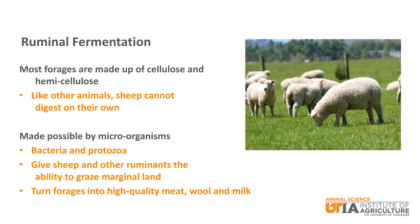Most forages are made up of cellulose and hemicellulose. Sheep, like other animals, are not able to digest these complex carbohydrates on their own. The ruminal fermentation is made possible by the rumen microorganisms. They give sheep and other ruminants the ability to graze land that is not well suited for anything else and turn the forages into high quality meat, wool, and milk.